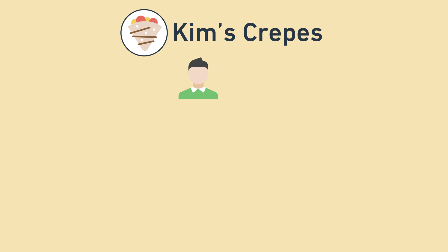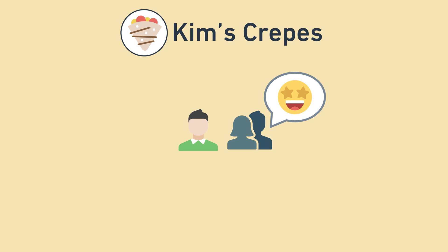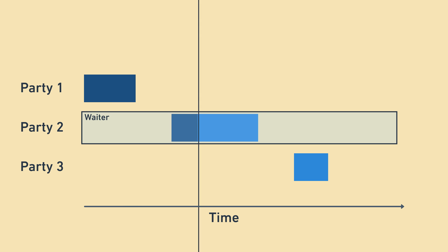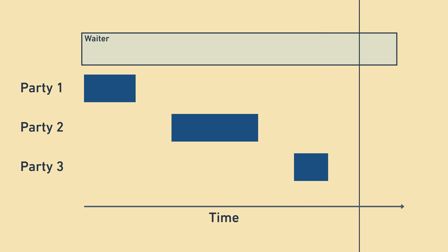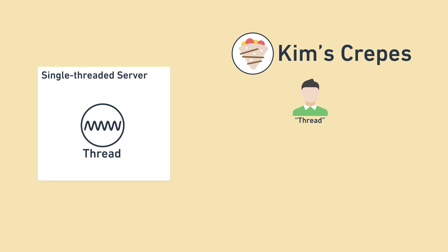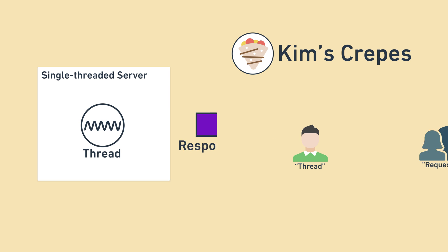We can explore this using a restaurant as an analogy. Here is an infrequently visited restaurant with just one waiter. Because it's not super popular, parties tend to come in one by one. The waiter serves each party before moving on to the next one. This analogy works really well to describe servers — the restaurant is just like a server that infrequently receives requests and has one thread. The one waiter is like the one thread, and the requests are like the parties that come in.